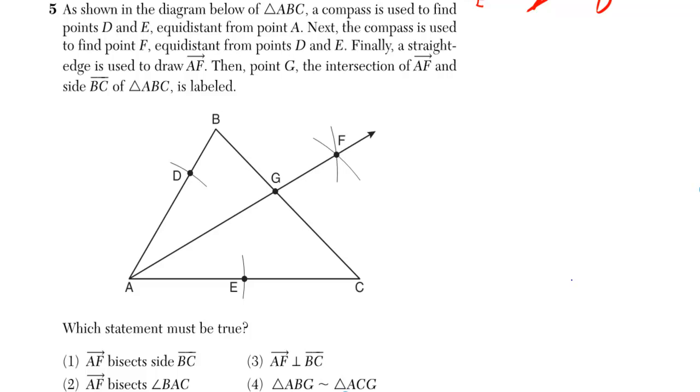AF bisects side BC. Well, that looks like it could be true. CG looks a little bit bigger than BG though, so I'm going to say it's probably not true.